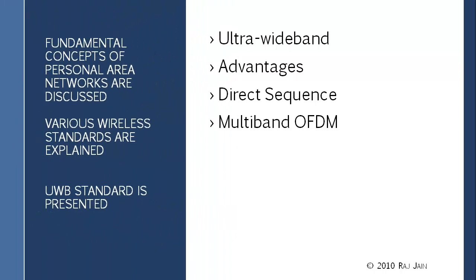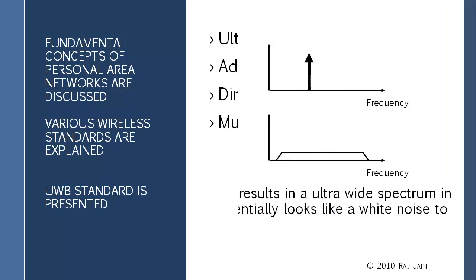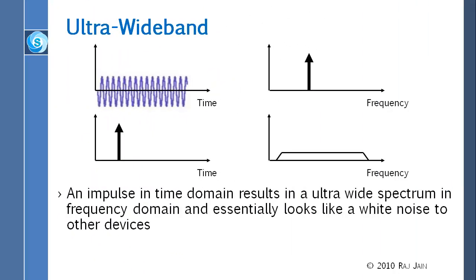In this module we will talk about two different protocols. The first is Ultra Wideband, UWB, and the second is ZigBee. Both of these are personal area network technologies. We will also briefly talk about millimeter waves and other activities.